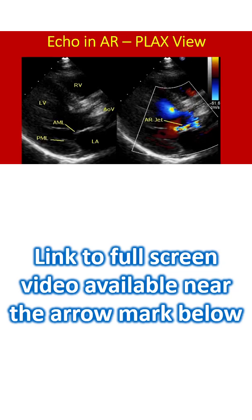This is a parasternal long axis view from another case. The aortic valve is seen as grossly thickened and calcified. The right panel shows the multicolored jet of aortic regurgitation along the ventricular surface of the anterior mitral leaflet. This is quite an eccentric AR jet, and hence assessment of severity will be difficult.